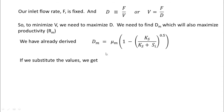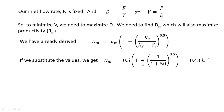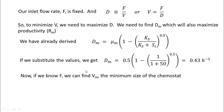Substituting the given values: Dm = 0.5 × (1 − √(1 / (1 + 50))). Calculating this value gives Dm = 0.43 hr⁻¹. You need a calculator to do this. If we know F, we can find Vm, the minimum size of the chemostat.